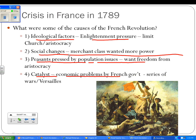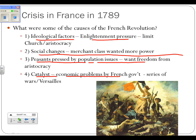There are social changes, such as merchants wanting more power. Number three, peasants are pressed by population issues and wanted freedom from the aristocracy. Fourth, the catalyst were economic problems brought on by the French government — a series of wars, one of which was the Seven Years' War and the supporting of the American Revolution, both of which cost France a great deal of money. Wars are expensive, and they raised taxes. Also, Versailles was built by Louis XIV — an incredibly fancy palace that was very expensive to maintain.